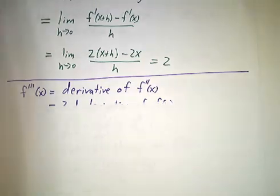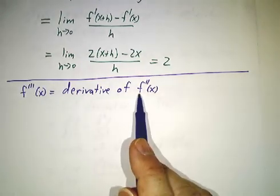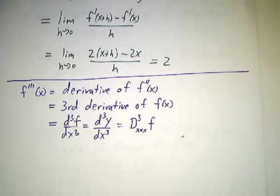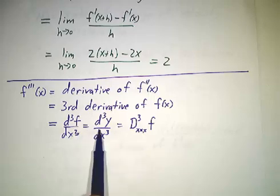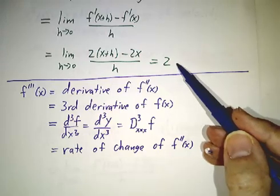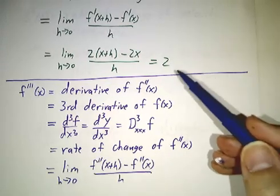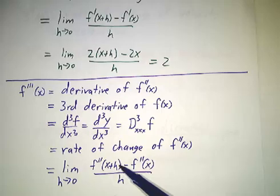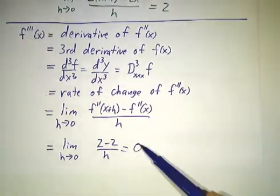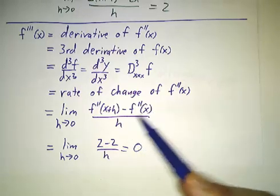Hooray, we can look at the third derivative. The third derivative of f is the derivative of f double prime. And here are some other notations for it. And it's the rate at which f double prime is changing. So in this case, how fast is f double prime changing? Well, f double prime of x plus h is 2, and f double prime of x is 2. It's not changing at all.